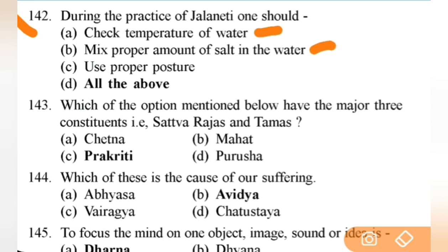Which of the options below has the major three constituents — Sattva, Rajas, and Tamas? Right answer is C — Prakriti. This question is related to Sankhya philosophy. Next: which of these is the cause of our suffering? Right answer is B — Avidya — ignorance.